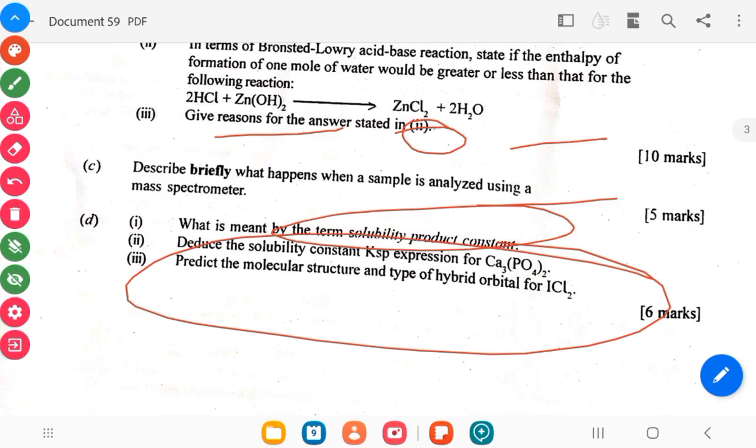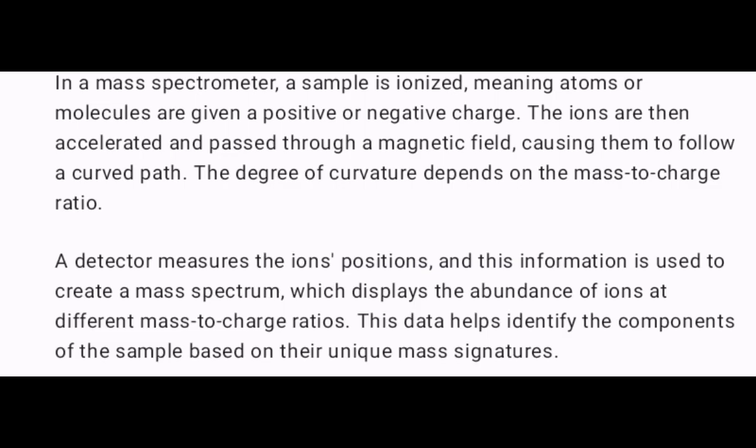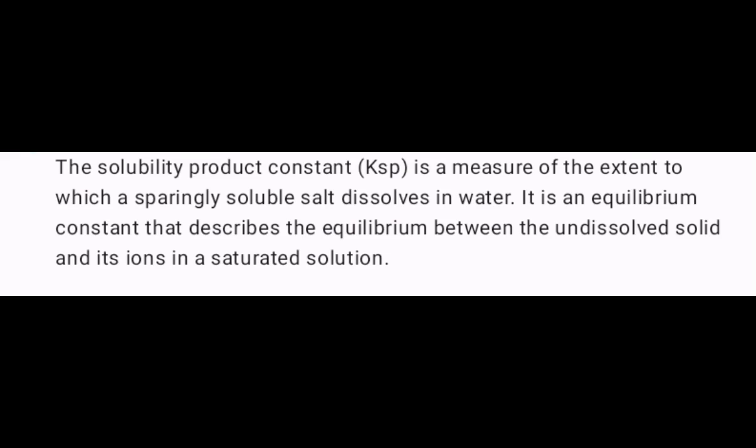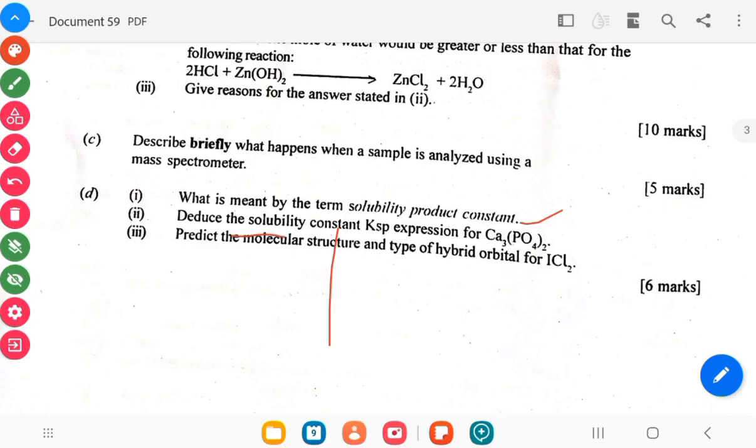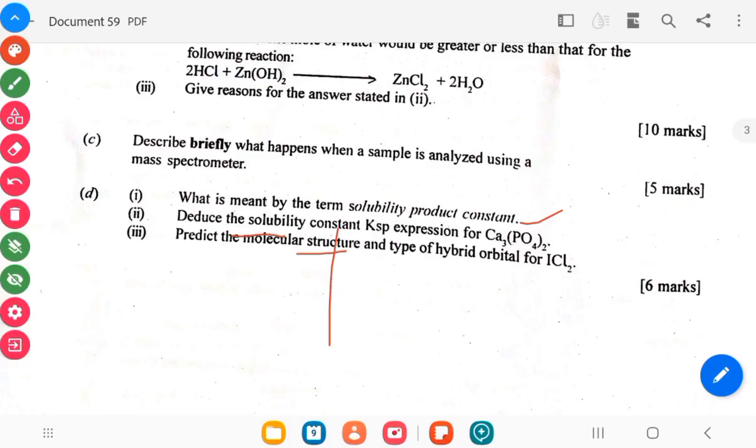Describe briefly what happens when a sample is analyzed with a mass spectrometer. Then we have the D which has to do with solubility which is the topic I also mentioned. So it's what is meant by the term solubility product constant. Deduce the solubility constant and then produce the molecular structure of this compound.